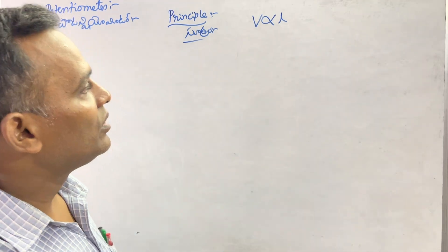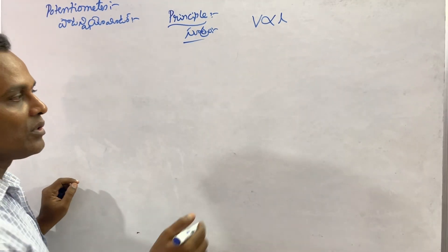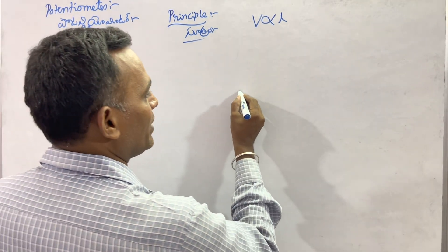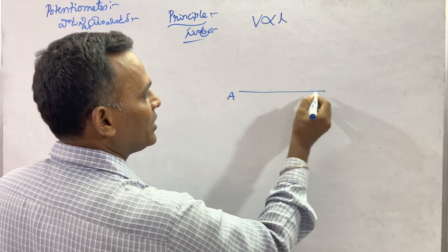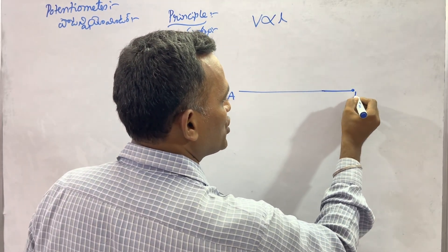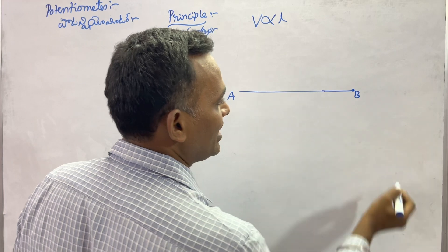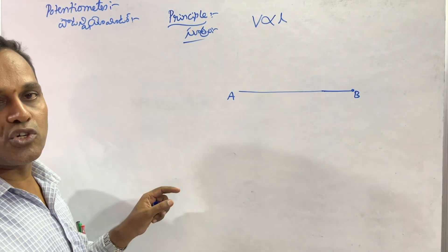Now looking at the circuit diagram, the total length of the wire is taken as AB.